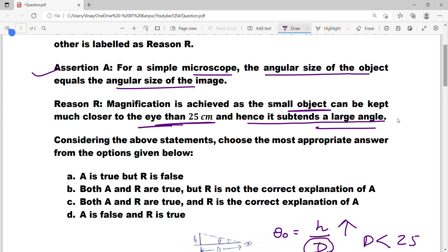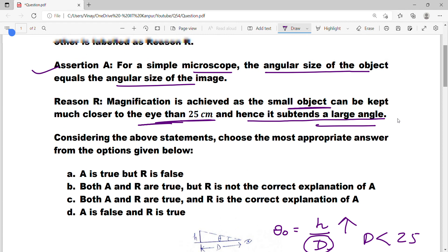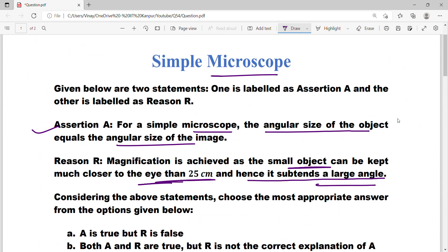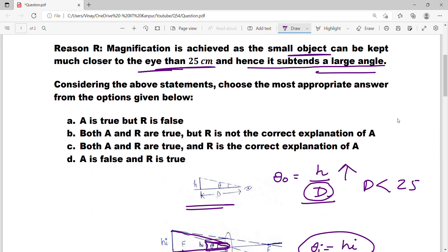Now tell me, does the second statement have any connection with the first statement? No. Congruent triangles is mathematics. Angular size of the object and angular size of the image being the same happens because these two triangles are congruent, and theta is common. They are the same. So the second statement is not going to explain the first one. Which option is true? A and R are true, but R is not the correct explanation of A. So option B is true.